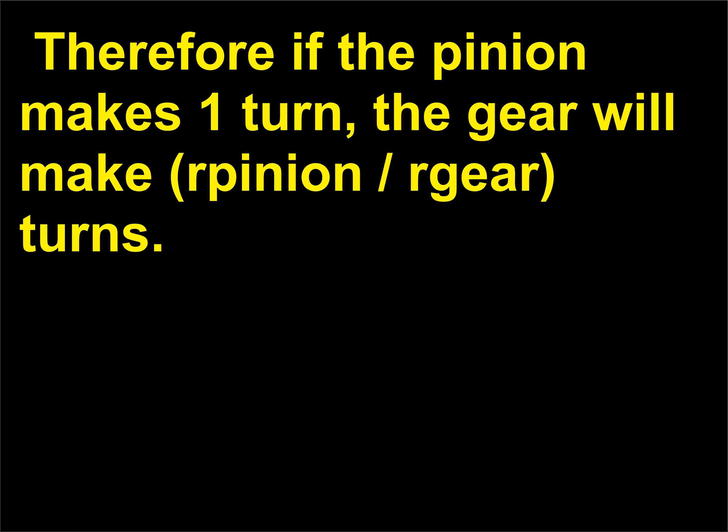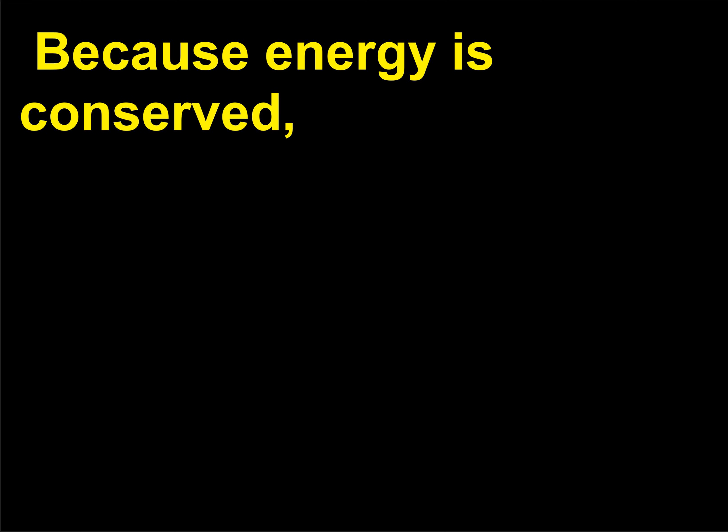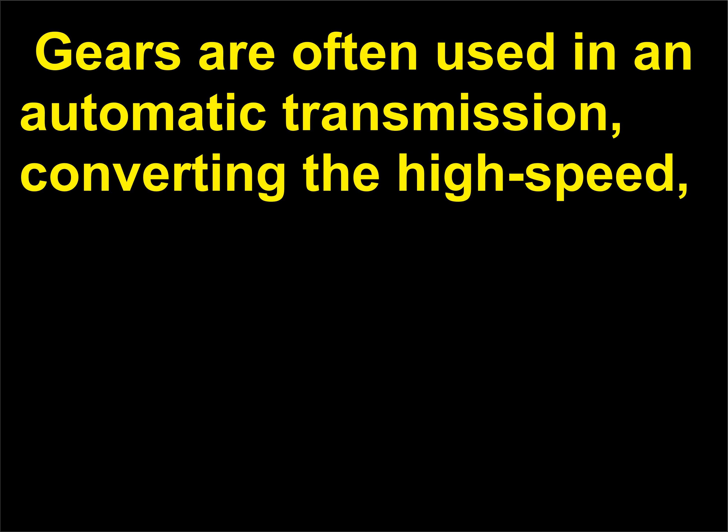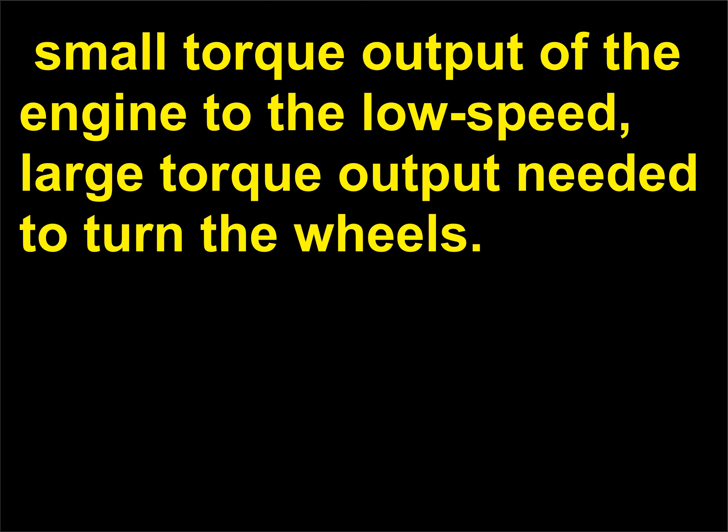Therefore, if the pinion makes one turn, the gear will make r-pinion/r-gear turns. Because energy is conserved, the torque exerted by the gear equals the torque applied to the pinion times r-pinion/r-gear. Gears are often used in an automatic transmission, converting the high-speed, small-torque output of the engine to the low-speed, large-torque output needed to turn the wheels. This kind of gear drive is called a step-down drive.